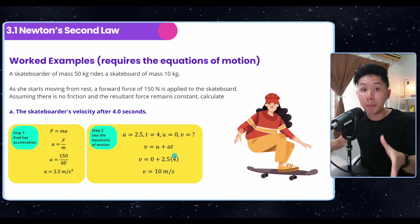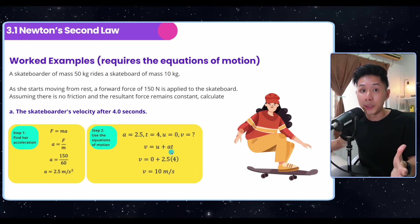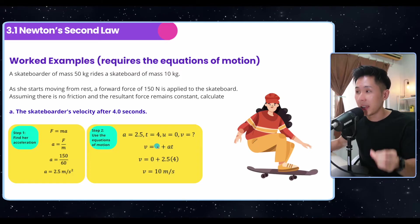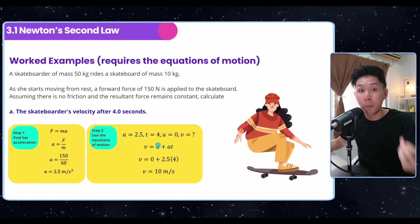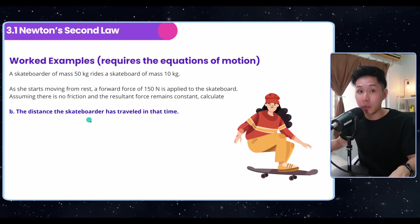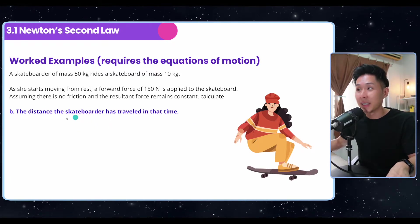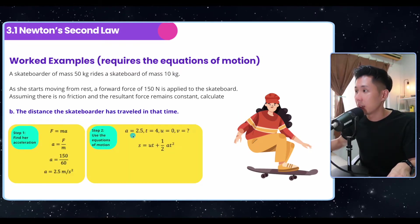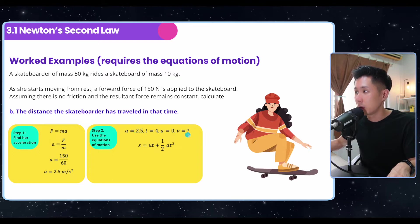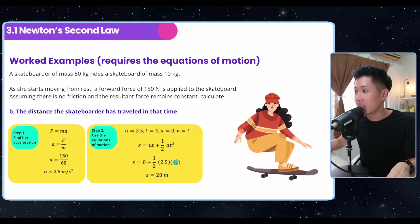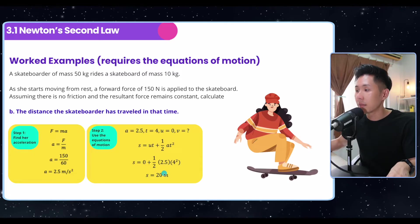That's the hard part of physics. Sometimes you do need to use multiple concepts, so make sure that you memorize the equations of motion. Sometimes just think critically about what topics are related in a particular question. The distance that the skateboarder has traveled: distance is one of the quantities in the equations of motion. You have a, you have t, you have u, and you want to find s. That's a typo, it should be s. The s can be found using this formula. Substitute and find the answer.